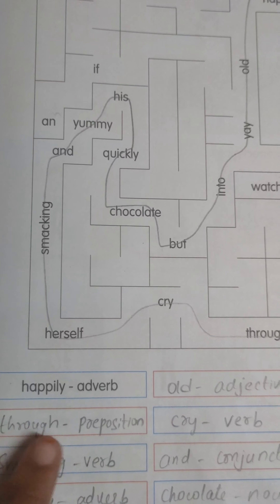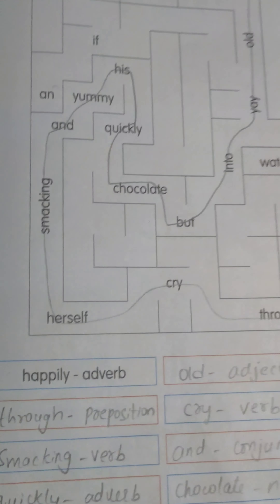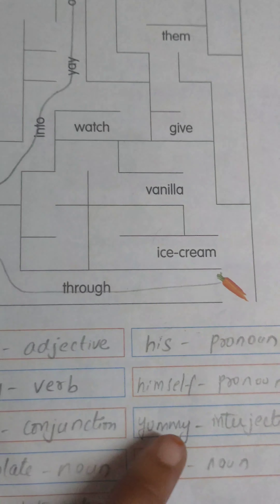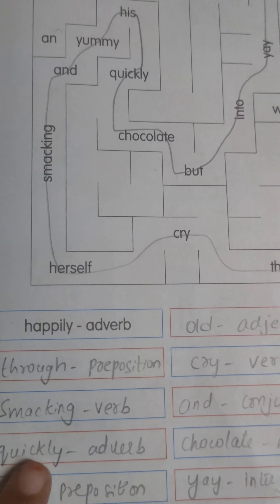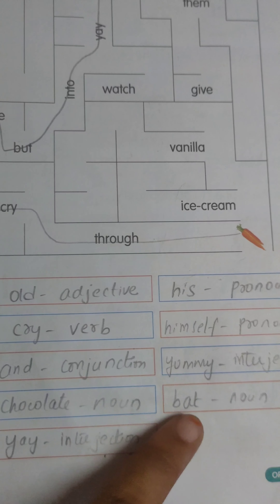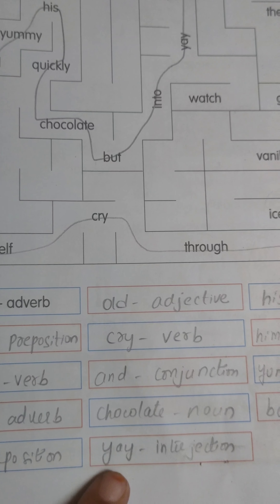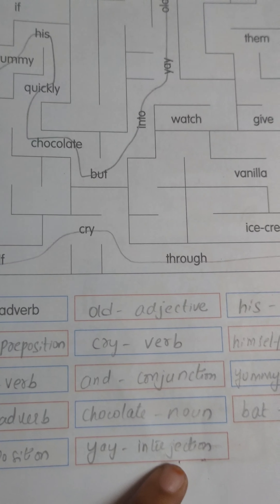Happily — adverb. Old — adjective. His — pronoun. Through — preposition. Cry — verb. Himself — pronoun. Smacking — verb. And — conjunction. Yummy — interjection. Quickly — adverb. Chocolate — noun. Into — preposition. A — interjection.